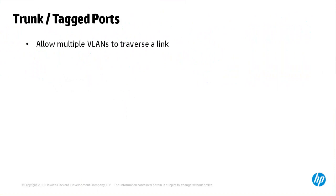Trunk or tag ports allow multiple VLANs to traverse a single link. There is one untagged VLAN and multiple tagged VLANs. There are two ways to do this: either using 802.1Q, which is an industry standard, or a proprietary method called ISL. ISL is Cisco's proprietary method and tends not to be used these days. 802.1Q is the industry standard and is the preferred choice for communicating information between switches across trunk or tag ports.